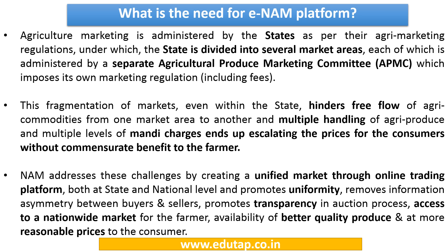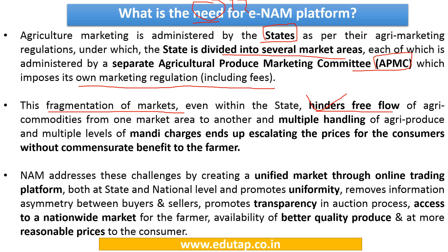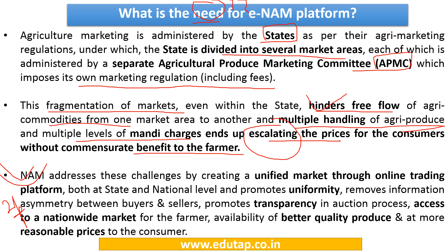The reason for launching the E-NAM platform in 2016 was that earlier, every state was divided into several market areas, each administered by a separate APMC which imposed its own market regulations. This fragmentation hindered the free flow of agri-commodities, and multiple handlings at various levels escalated prices without benefiting farmers. NAM addresses this by creating a unified market through an online trading platform, promoting transparency in the auction process and access to a nationwide market for farmers.